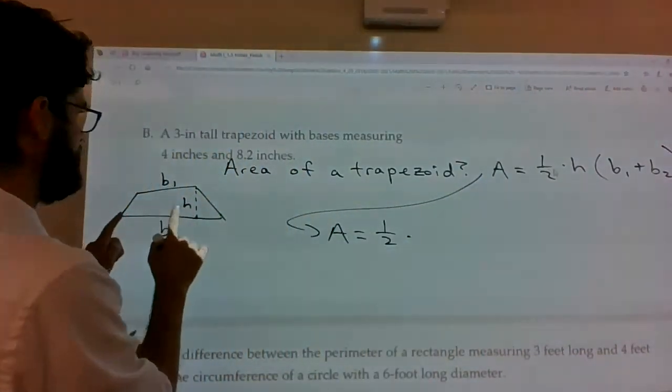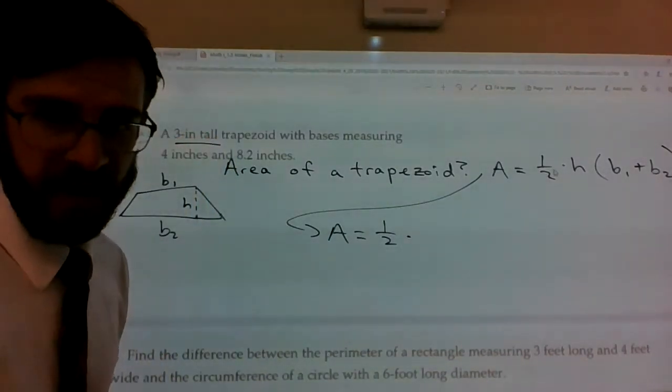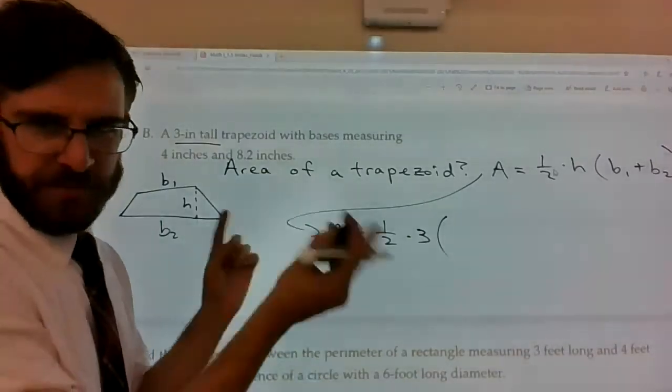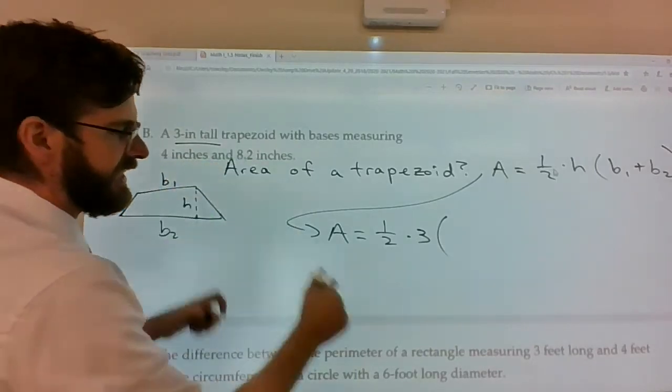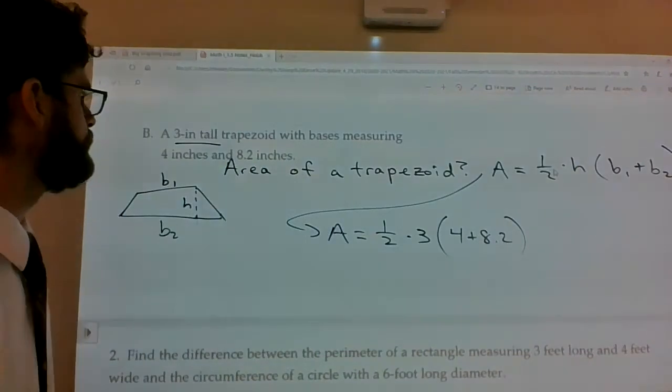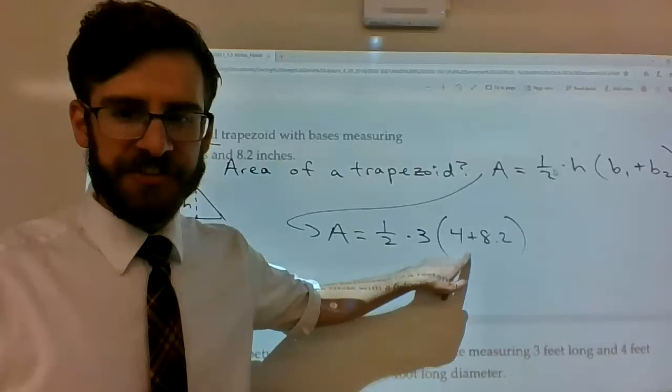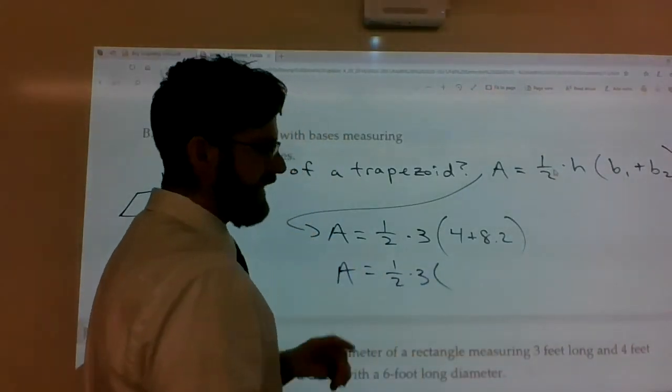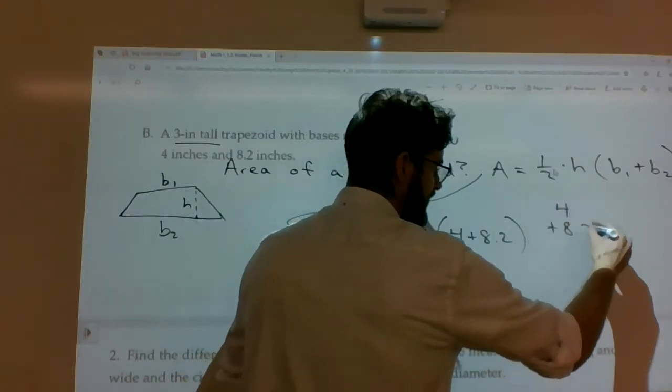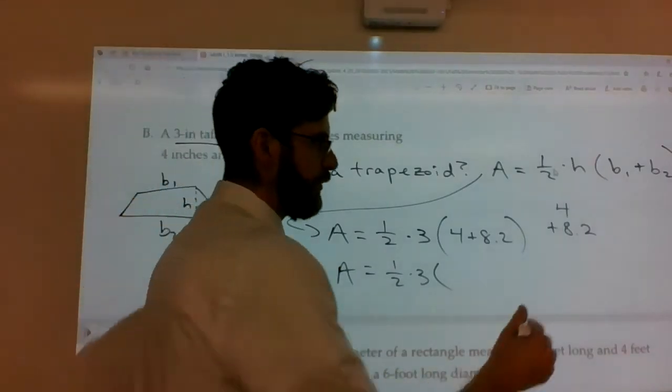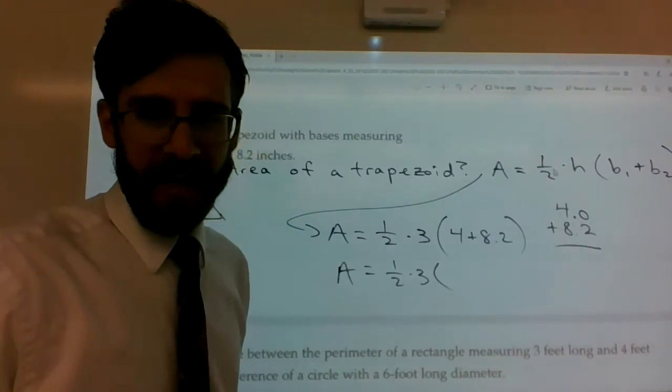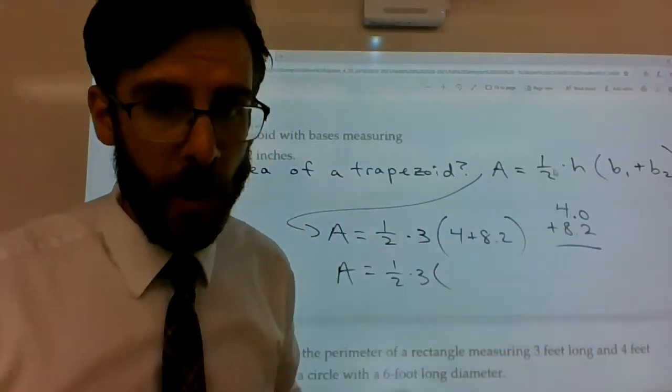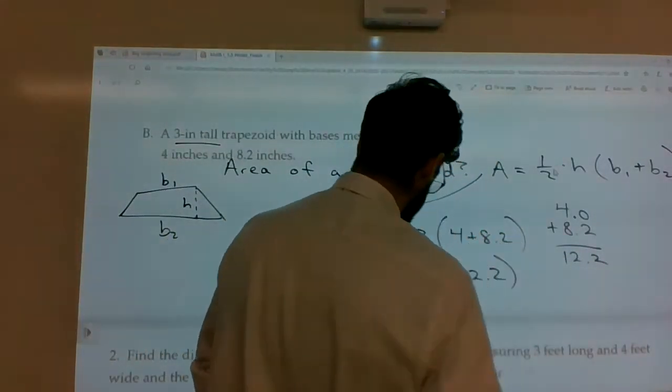So, our area is a half times what is its height? Well, three inches tall would indicate that that three is its height. Base one. You know, it doesn't really matter which one you call the base one. Base one plus base two. Base two plus base one. It doesn't matter the order. So, four plus eight point two. Alright. So, then you would do the stuff inside the parentheses first. Order of operations. Parentheses first. And keep in mind that when you have a decimal included in addition, you have to line up the decimals of the numbers. So, four really needs to be called four point zero. Otherwise, you might accidentally tag the four along with the point two. And that would be a disaster. Four plus eight point two is not eight point six. Four plus eight point two is twelve point two.